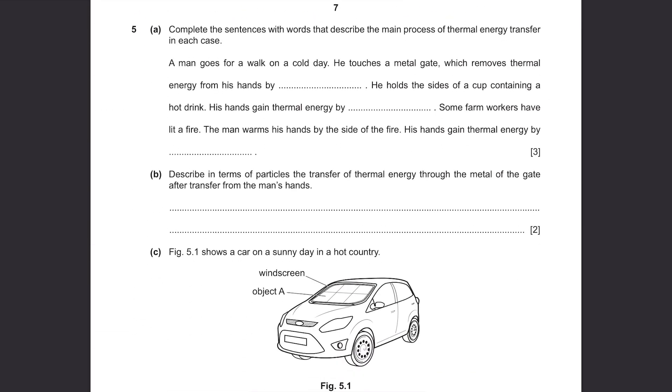Question 5, Part A. Complete the sentences with words that describe the main process of thermal energy transfer in each case. A man goes for a walk on a cold day. He touches a metal gate which removes thermal energy from his hands by... something. We have three main processes of thermal energy transfer which are conduction, convection, radiation. There are only three, it's easy to guess. Radiation gives off heat, so it's not going to remove thermal energy. And convection is in liquid, so obviously that's not the answer. So the only answer is conduction. He holds the sides of a cup containing a hot drink. His hand gains thermal energy by... something. Even if he's holding a cup with a hot drink which is liquid, he's still holding a cup which is solid. So this is still conduction. Some farm workers have lit a fire. The man warms his hands by the side of the fire. His hands gain thermal energy by something. So you're getting the heat energy directly from the source of heat. And this is radiation. It travels through the air.